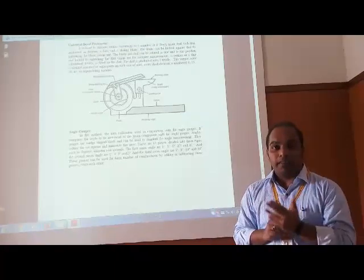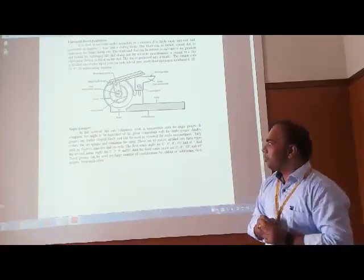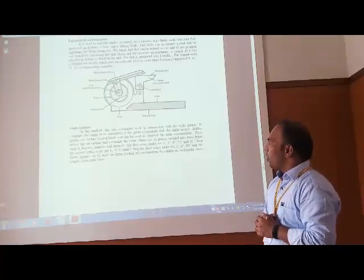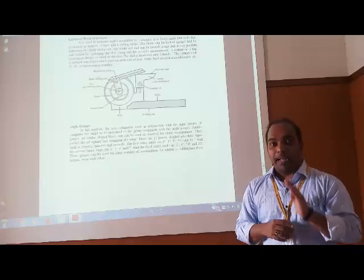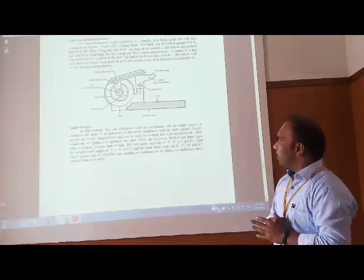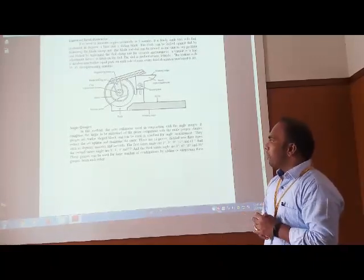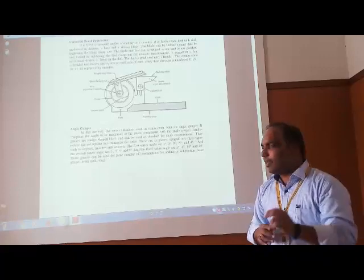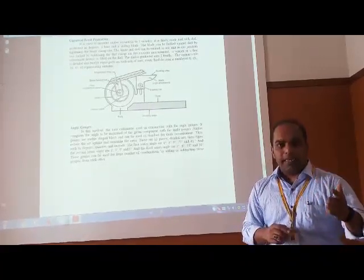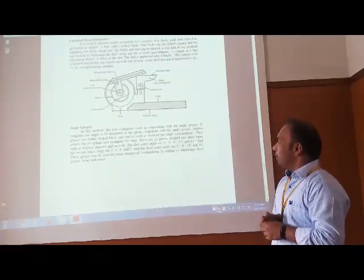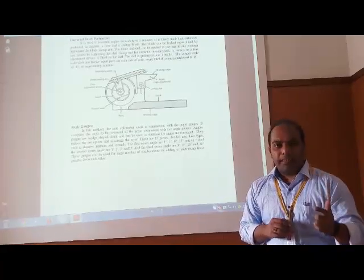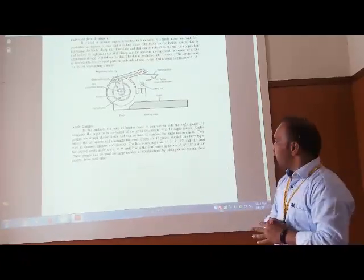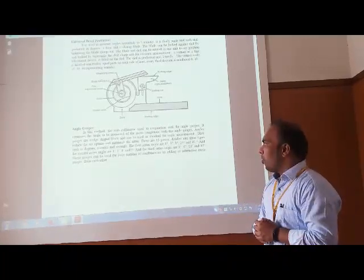Let us see another instrument of this segment, that is angle gauges. In this method, the autocollimator is used in conjunction with angle gauges. It compares the angle to be measured of a given component with the angle gauges having standard angles. Angle gauges are wedge shaped blocks and can be used as a standard for angle measurement. They reduce the setup time and minimize the error.